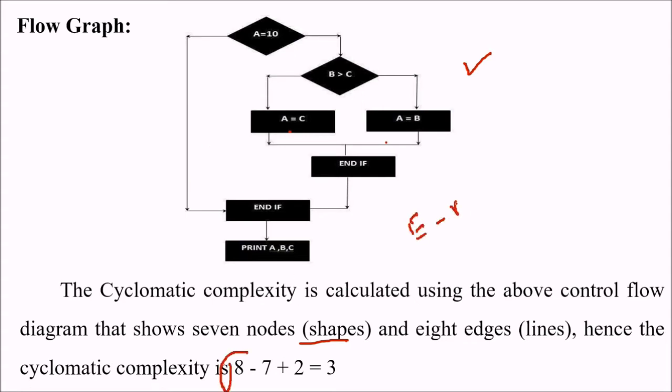Remember this: E minus N plus 2. E minus N plus 2, that is 8 minus 7 plus 2, that is 3. The cyclomatic complexity is E minus N plus 2, that is 8 minus 7 plus 2, equals 3.